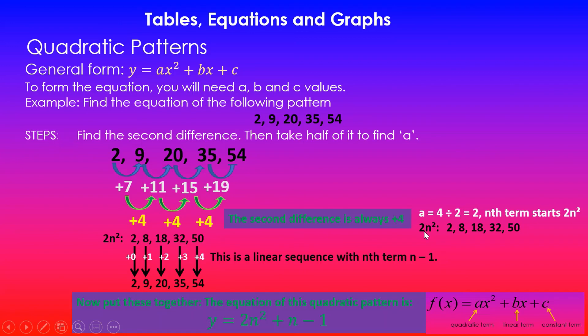What you need to do is find the second difference. Then just half it. That gives you the a value. So then you write 2n squared. Then get the sequence for 2n squared by replacing n by 1, 2, 3, 4, etc. Once you've got that, you bring down the pattern that you were asked to find the equation for and then see by how much it is changing. In this case, it's changing by a linear sequence because 0, 1, 2, 3, 4, it's increasing by 1 each time. So we've got 1n. The first term was 0. So 1 minus 1 will give you 0. That's why I've got n minus 1. And then we put that together. So 2n squared plus n minus 1 gives you the equation.